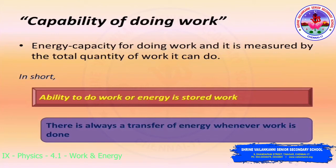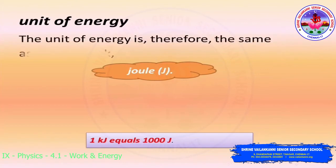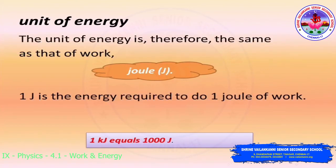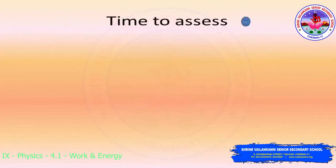There is always a transfer of energy whenever work is done. The unit of energy is the same as the unit of work, which is the joule. 1 joule is the energy required to do 1 joule of work. We can say 1 kilojoule is equal to 1000 joules.